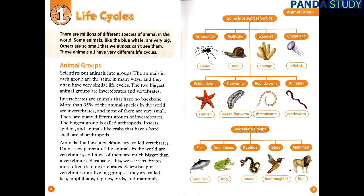Animal groups. Scientists put animals into groups. The animals in each group are the same in many ways, and they often have very similar life cycles. The two biggest animal groups are invertebrates and vertebrates.